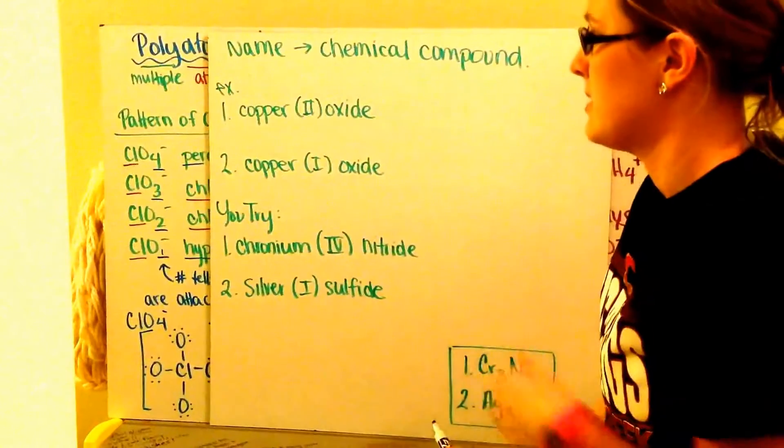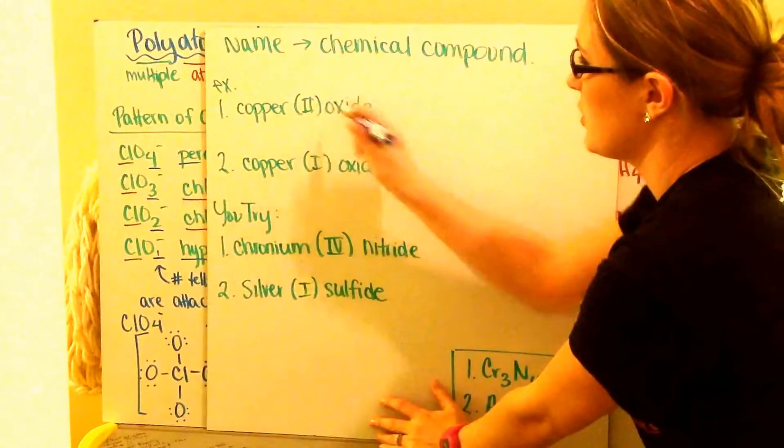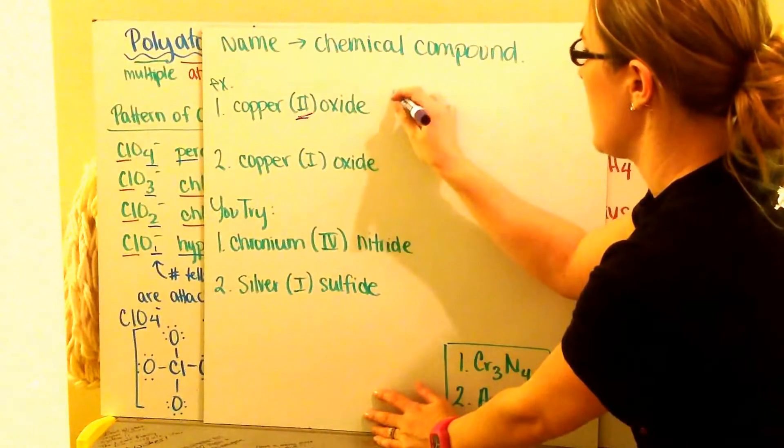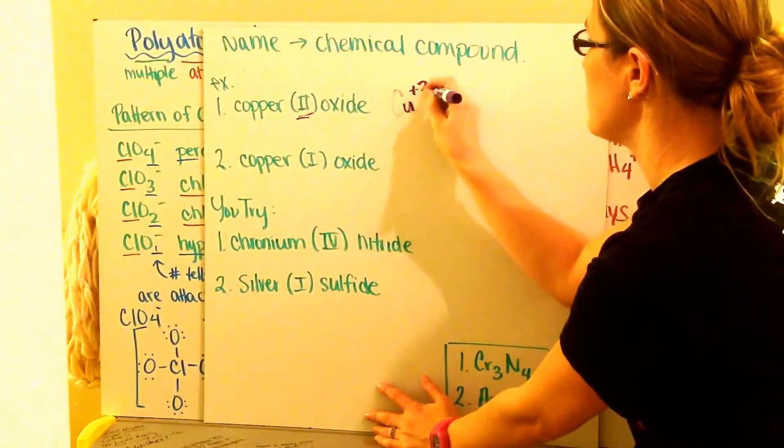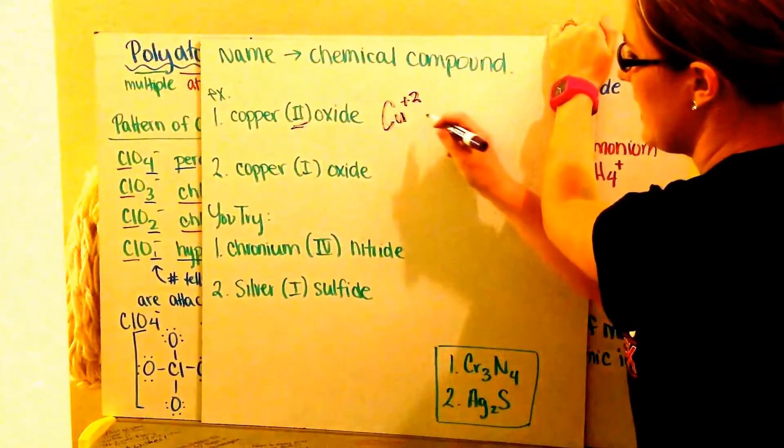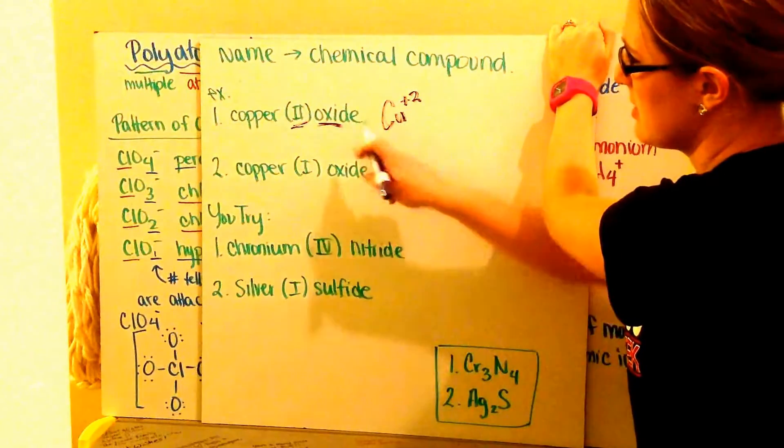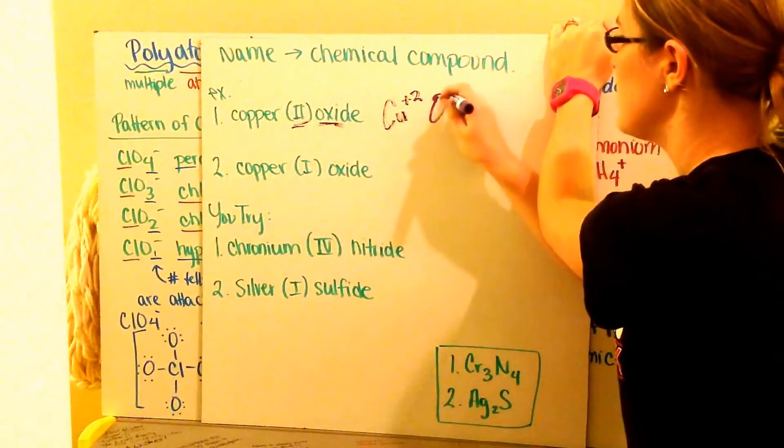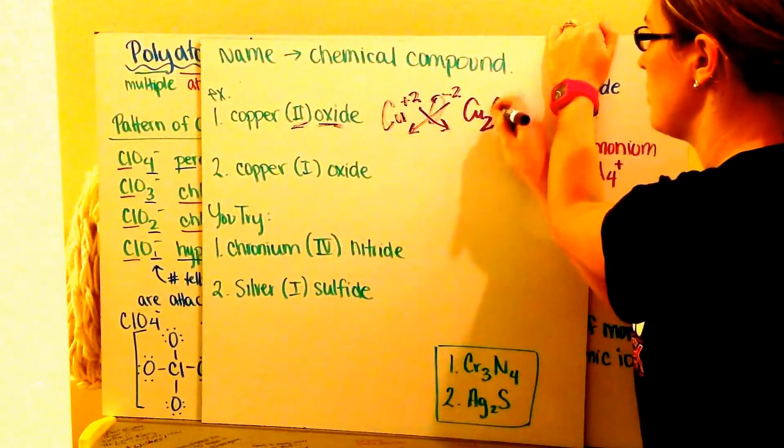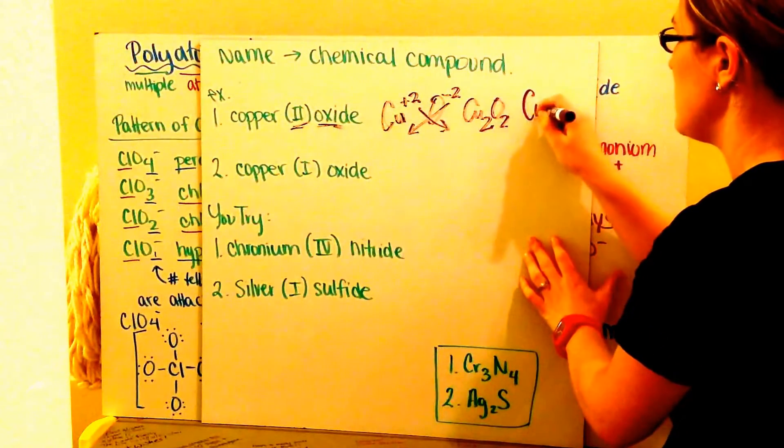Well what if I want to go the opposite way? Well I just go in reverse order. Here I have copper (II) oxide. This 2 here tells me what my charge is of my copper. So I write copper, Cu, and it's plus 2 because my roman numeral 2 tells me that I have a plus 2 charge. Then I have my oxide. Well oxide, my ox stem there tells me that I have oxygen, and oxygen is minus 2. So I crisscross my charges down, and I get Cu2O2. Now they're both the same so I can reduce to have CuO.